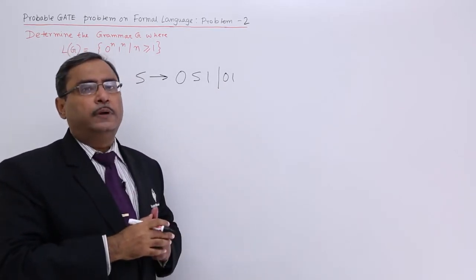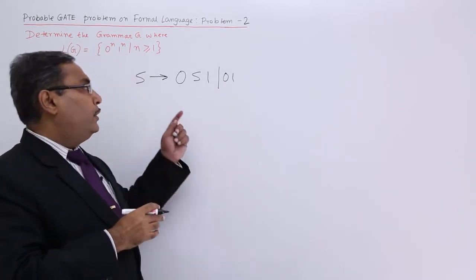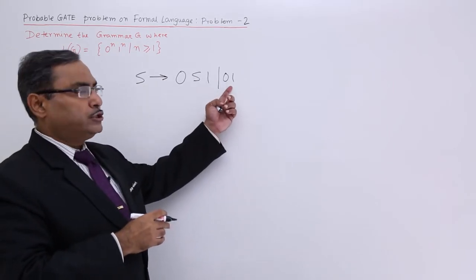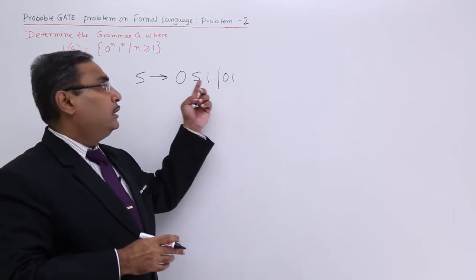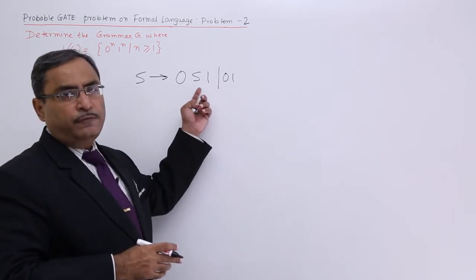Here you cannot create any kind of null string. Why? Because if you apply this particular production rule first time, then you will be getting at least 1 zero, at least 1 one; otherwise these things will be formed.